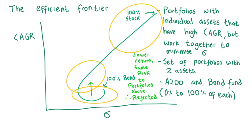Depending on personal risk tolerance, we may or may not reject these portfolios. Sliding down the curve, we find that it bends sharply. This is demonstrating the point at which we can achieve the largest unit of return per unit of risk. We'll look at how this is calculated in a future video.